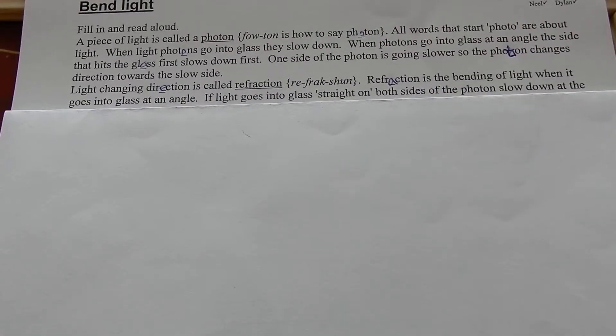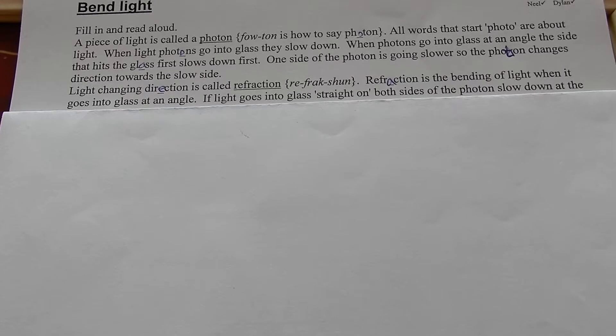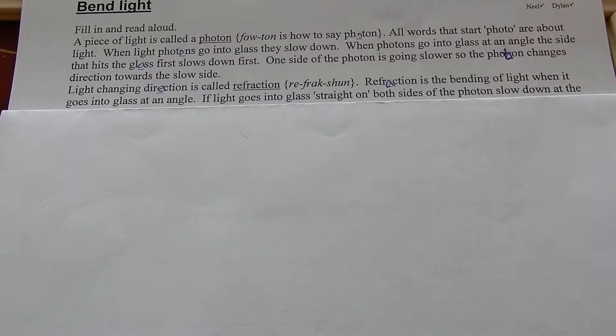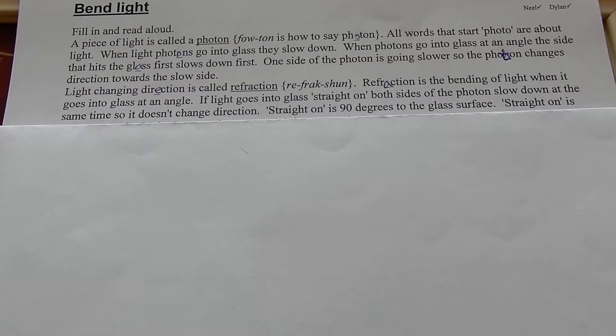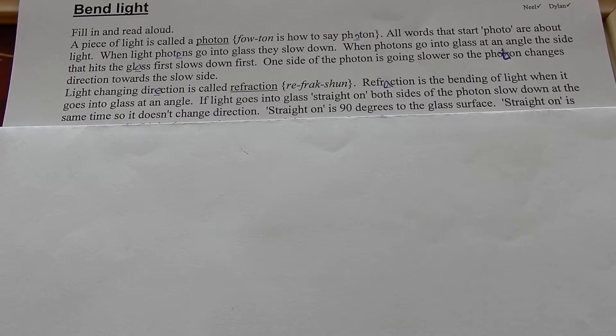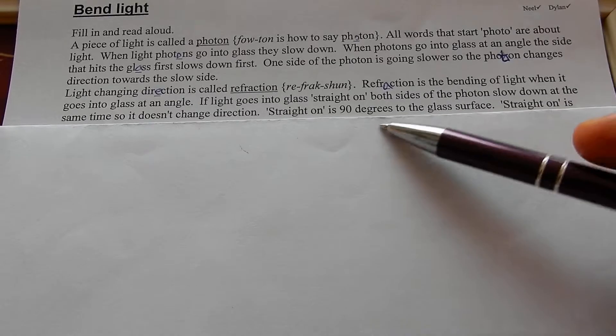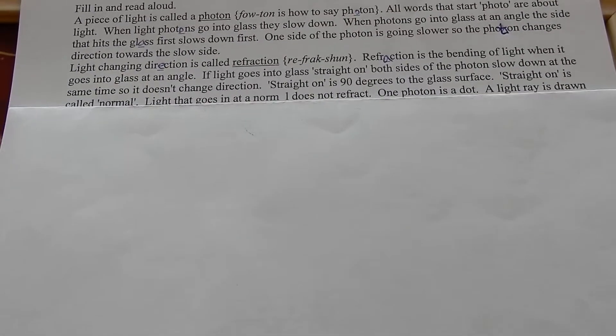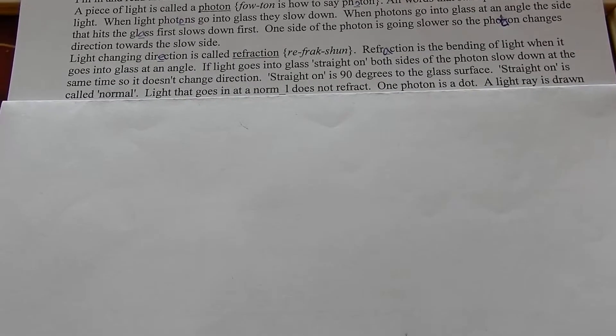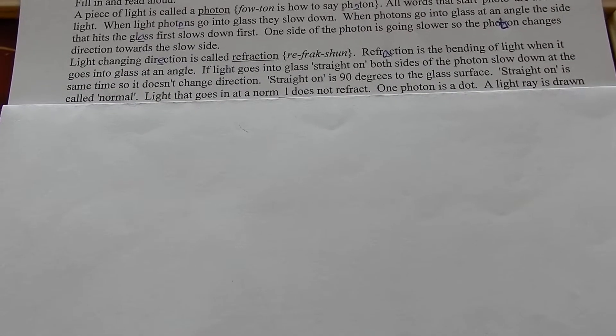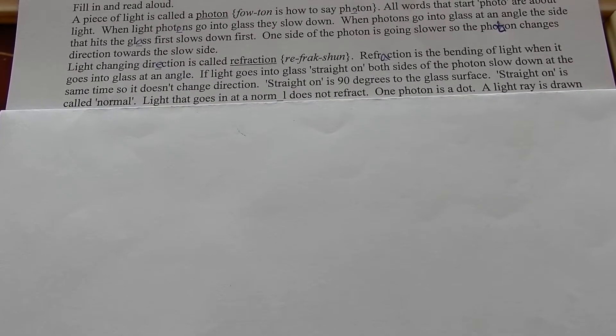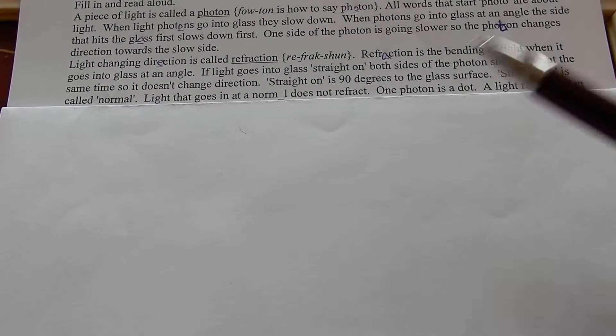If it goes in at 90 degrees perpendicular you don't get any refraction. If the light goes into the glass straight on both sides of the photon slow down at the same time, so it doesn't change direction. Straight on is 90 degrees to the glass surface. Straight on is called normal. Light that goes in at a normal does not refract.